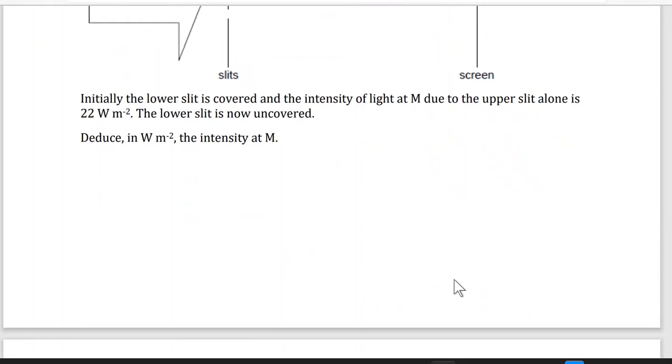Here, I_n, the number of the slits equals n squared - n is the number of the slits - times I one, the intensity of one slit. So here I have double two slits. So I two will be two squared times intensity of one slit. The question gives it to me, the intensity is 22. So I will have 88 watt per meter squared.